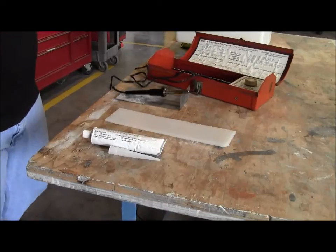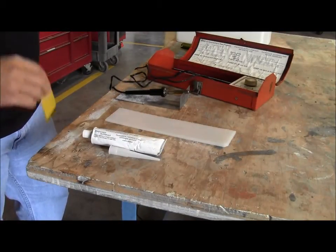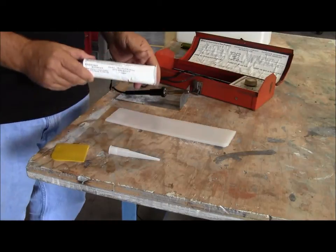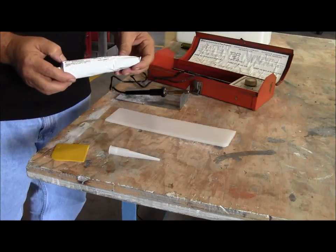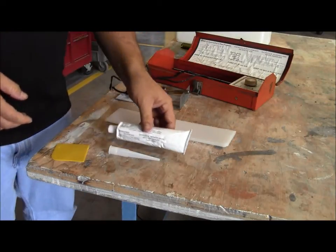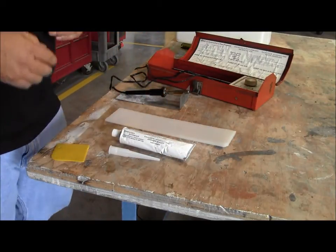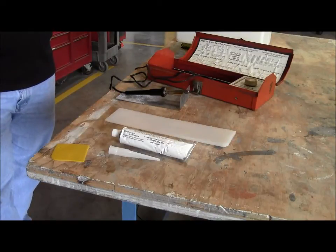Alright, so the next couple of methods we want to show you guys is, one is a product called EM89. EM89 is made by a company called Engineered Materials. It's supposed to be a plastics bond material. We could use the same process as we used on the 5200.